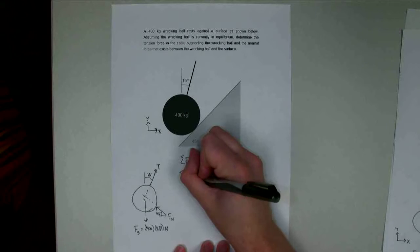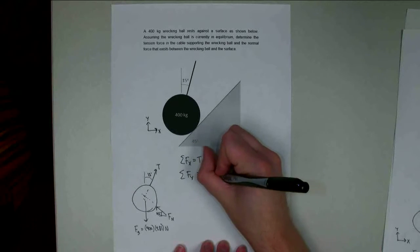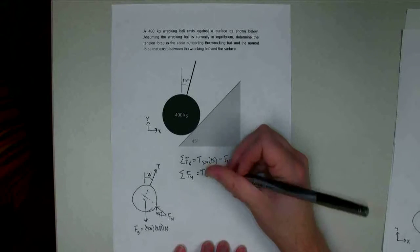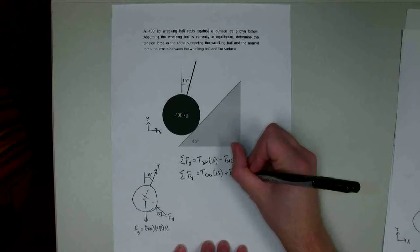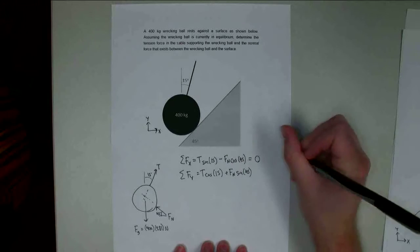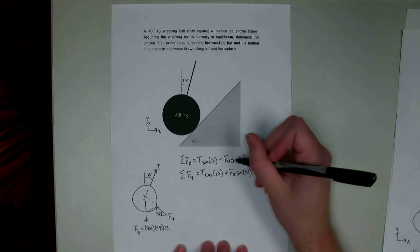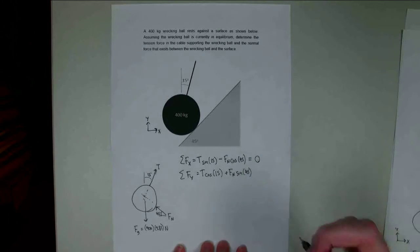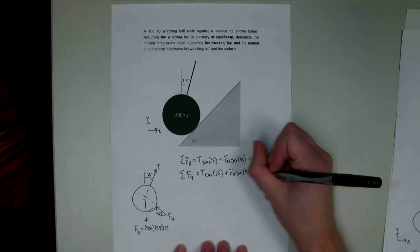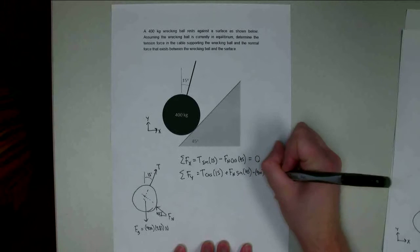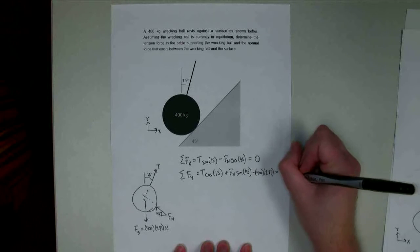Same thing for sum of forces in the y direction. The tension force is t cosine of 15. Normal force is also going to be positive - plus Fn times sine of 45. With forces in x and y, you always have a sine cosine pair, but the order could change depending on if you're measuring from vertical or horizontal. Last part is the gravitational force, minus 400 times 9.81. Sum of all y components equals zero.